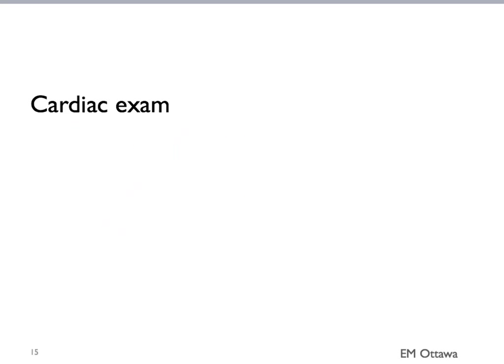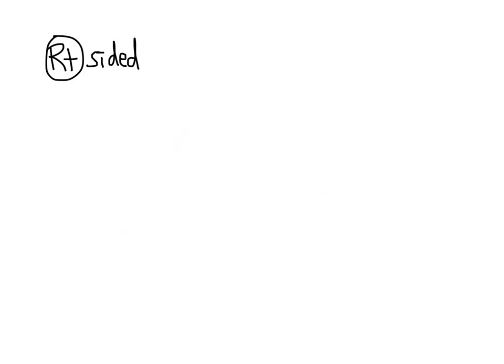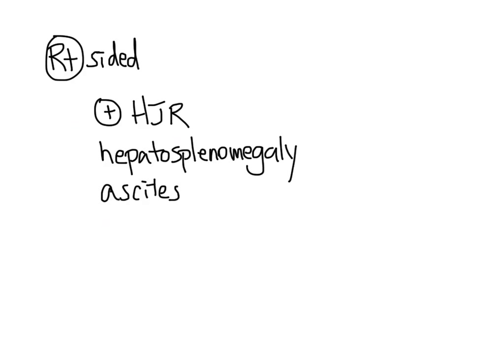On the cardiac examination, we might hear extra heart sounds like an S3, S4, or murmurs. The JVP will be high. For right-sided heart failure, we will see hepatojugular reflex, hepatosplenomegaly, ascites, and peripheral edema. Since most patients who have right-sided heart failure stems from left-sided heart failure, often we will see physical findings of both in the same patient.